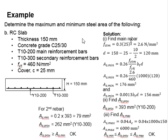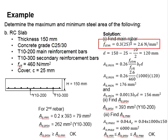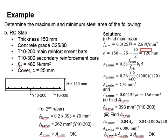This is the solution for the reinforced concrete slab to determine the maximum and minimum steel area. First, you deal with the main reinforcement bar. The concrete grade is 25, so using Table 3.1 in Eurocode, fctm equals 2.6. Next, calculate the effective depth: 150 (slab height) minus cover 25, minus half of the main reinforcement bar diameter.